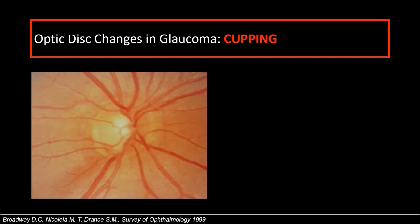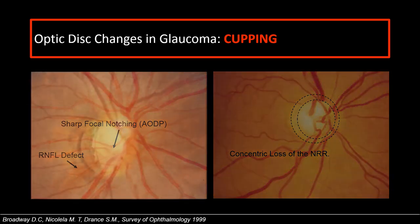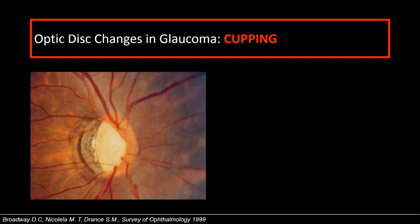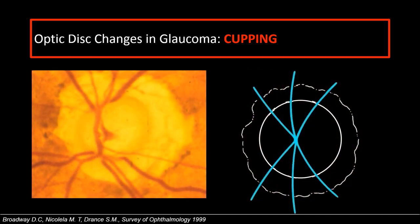The loss of the neuroretinal rim can be focal, called notching. A particularly deep notch at the scleral ring is sometimes called an acquired optic disc pit, adjacent to an area of inferior nerve fiber layer defect. The second form is concentric or circumferential loss, where the rim is lost circumferentially and the cup enlarges in all directions. In glaucoma with myopia, features include a tilted disc, pale vertical cup, pronounced beta and alpha zones temporal to the disc, and a small optic disc hemorrhage. In very advanced glaucoma, total loss of the neuroretinal rim occurs with marked pallor of the cup.